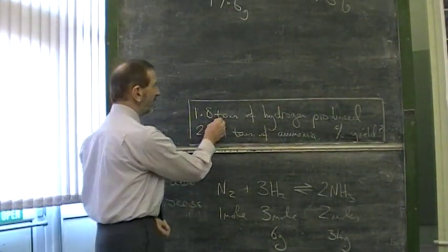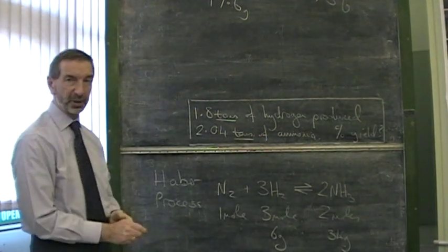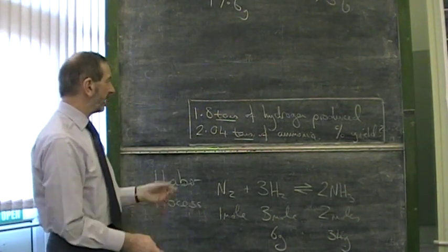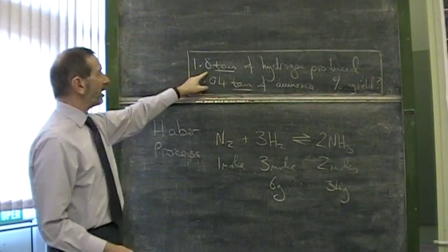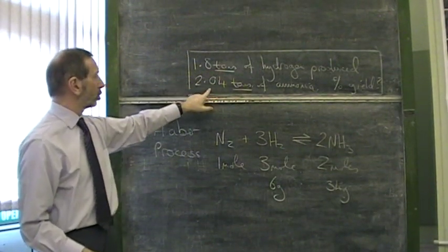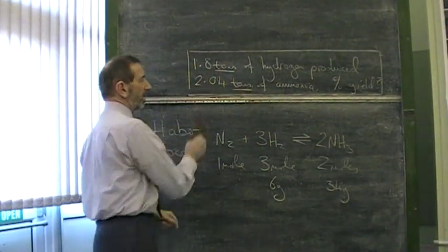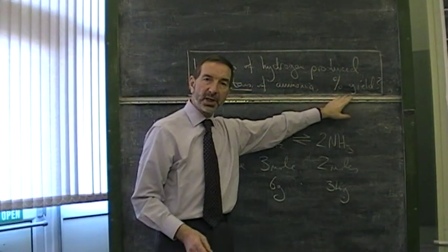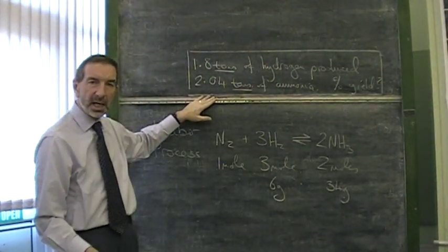This time the question is in tons. It would appear to be more difficult, but it isn't. 1.8 tons of hydrogen produced 2.04 tons of ammonia. What's the percentage yield? Does this represent a complete success or not?